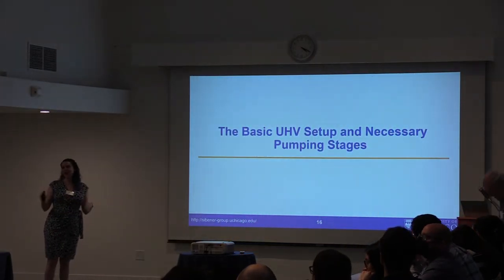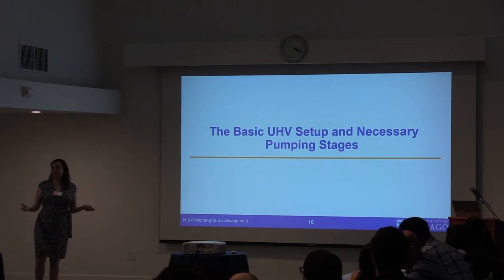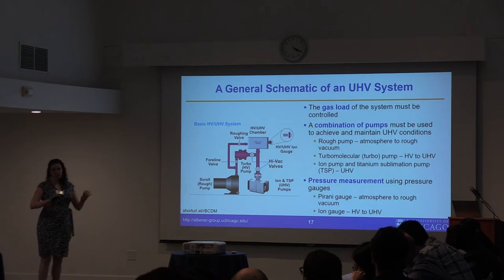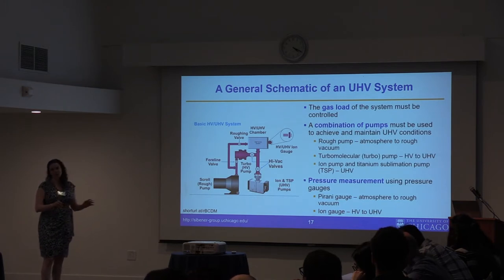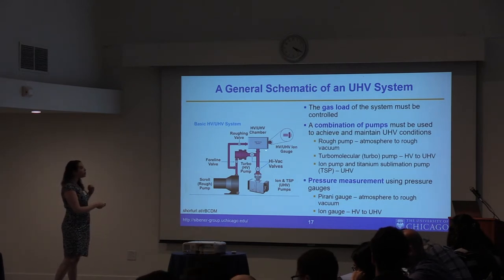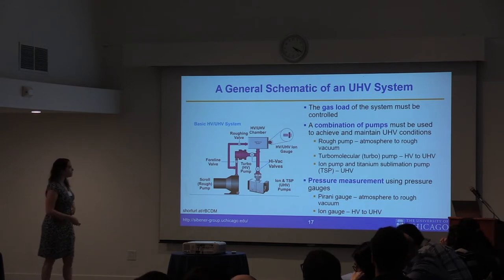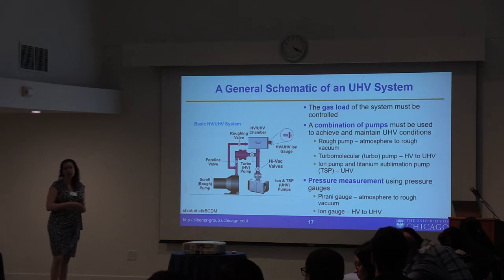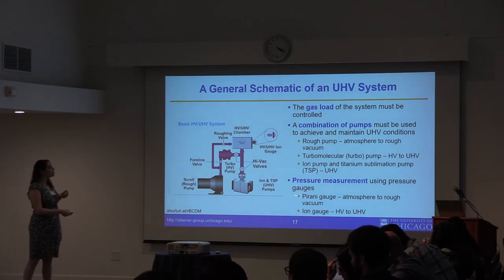We've given some context of why UHV and different parameters to consider, but how do you actually get it? You need a variety of different pumping stages to move from atmospheric pressure to UHV conditions. When looking at a UHV system, you have a scroll or rough pump going from atmosphere to rough vacuum, then a turbo pump taking you from high vacuum toward UHV conditions, and then an ion pump or titanium sublimation pump to get even further into the UHV regime. You need all these components connected so gas can flow efficiently and you can maintain UHV pressures detected by your gauges.